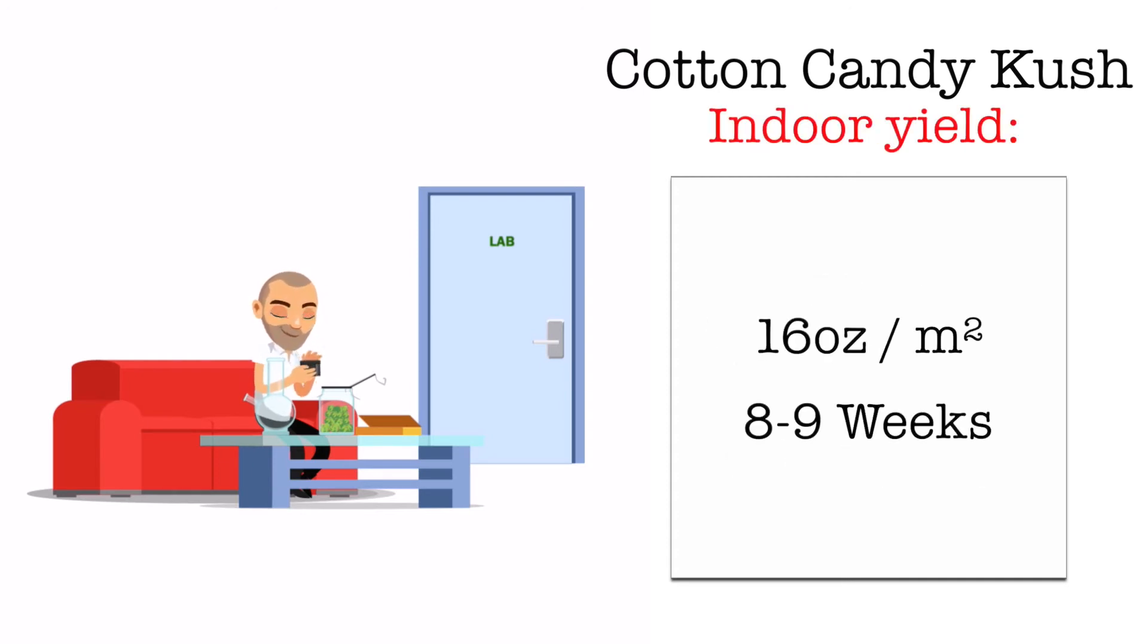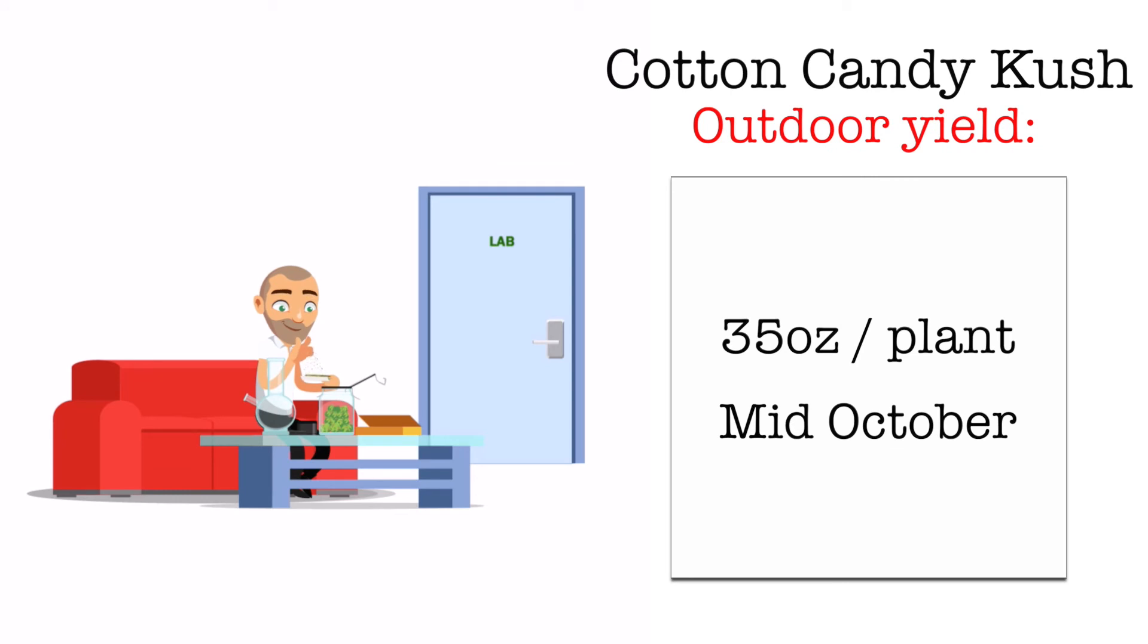Its indoor yield can be up to 16 ounces per square meter with an average flowering time of 8 to 9 weeks. Its outdoor yield can be up to 35 ounces per plant and it's available for harvest in mid-October.